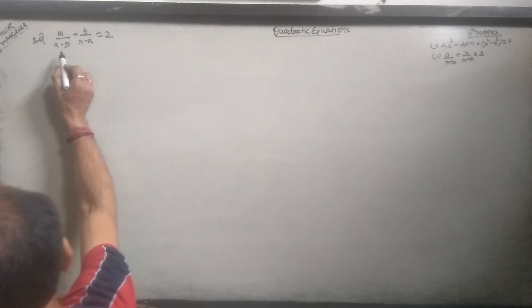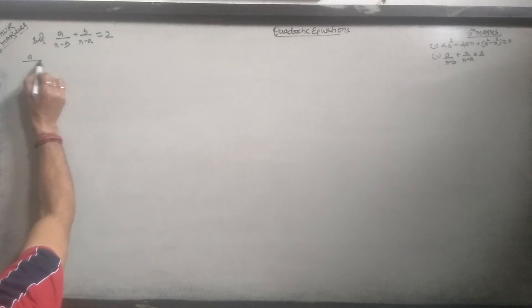Now, a over x minus b, plus b over x minus a, minus 2 is equal to 0. Okay.